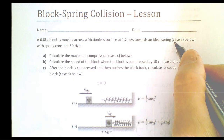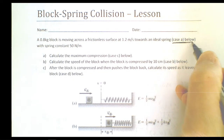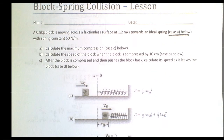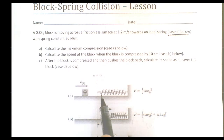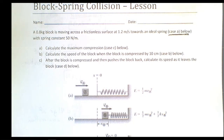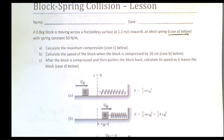This is indicated as case A. We're going to answer a couple of questions: one is to calculate the maximum compression when the block slams into the spring, and the second is to calculate the speed of the block when the spring is compressed by 10 centimeters. After the spring pushes the block back, we also calculate its speed as it leaves — that's case D.